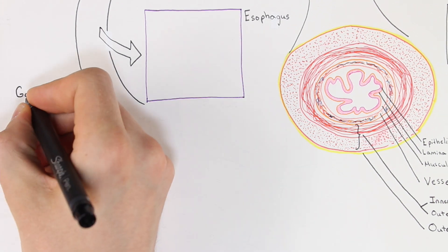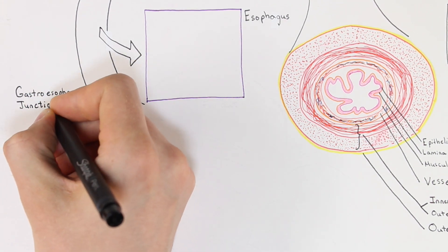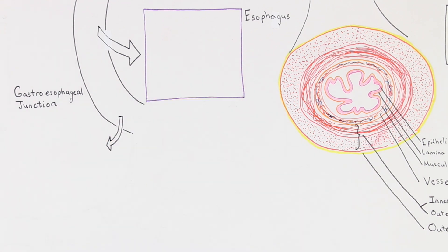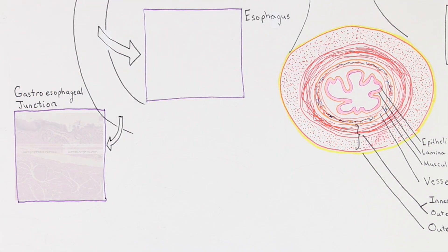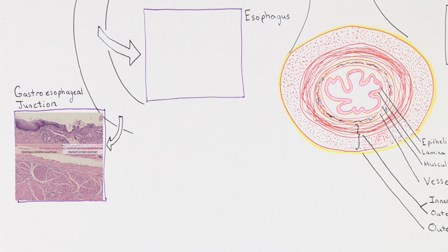Right before the esophagus connects to our next structure, there is a junction that you should be familiar with known as the GE or the gastroesophageal junction. This junction is characterized by the abrupt change from stratified squamous cells to simple columnar cells. That is all you need to be familiar with with this part of the tract.